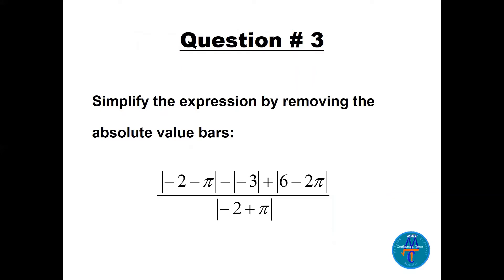Question 3: simplify the expression by removing the absolute value bars. Remember — when you remove them, you must check the sign of the expression inside. If the inside is positive (≥ 0), leave it as is; if negative, put a minus sign in front. The terms involve: −2 − π, −3, 6 − 2π, and −2 + π.